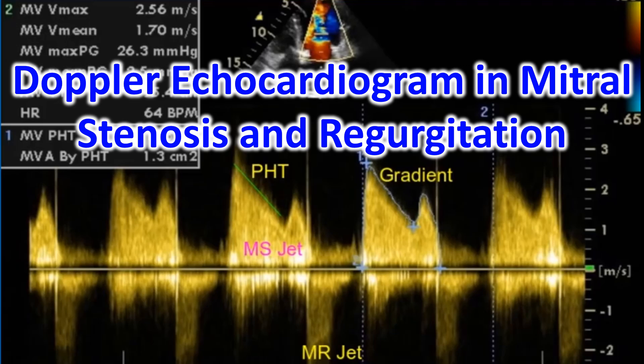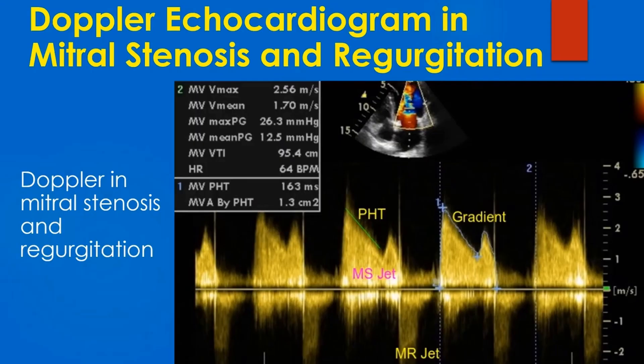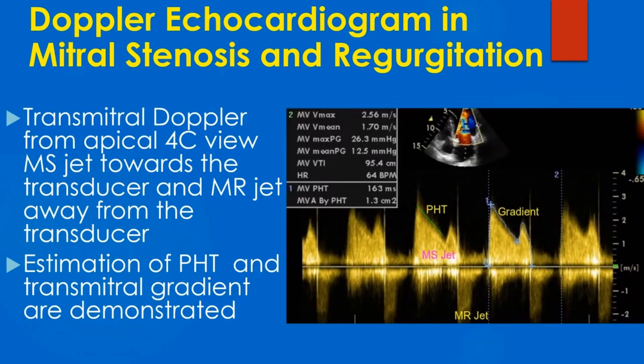Doppler echocardiogram in a combination of mitral stenosis and regurgitation. Here is a tracing obtained by Doppler interrogation in mitral stenosis and mitral regurgitation. Transmitral Doppler from the apical four-chamber view shows the jet of mitral stenosis toward the transducer and the mitral regurgitation jet away from the transducer, below the baseline.